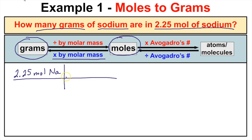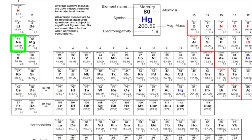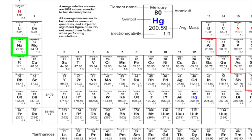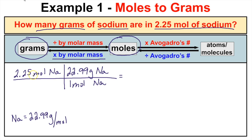The molar mass of sodium — this is where we turn to our periodic table of elements. You'll see that the molar mass of sodium is 22.99 grams per mole. That means there are 22.99 grams of sodium for every one mole of sodium. The unit moles of sodium on top and bottom will cancel out, leaving you with grams of sodium. Get your calculator out and take 2.25 times 22.99, and you'll end up with 51.7 grams.